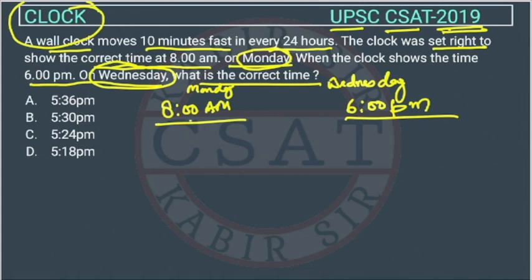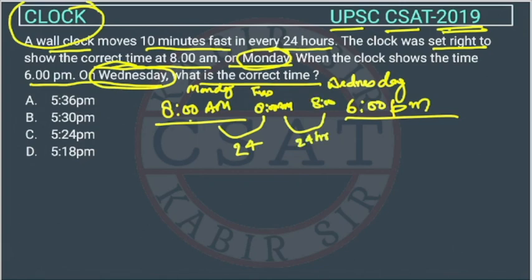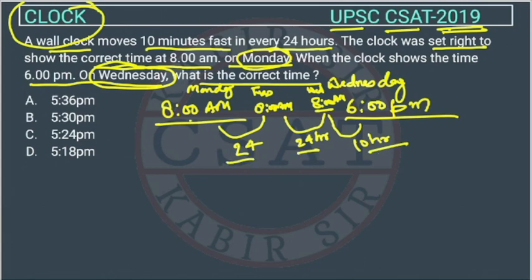If we look carefully, we are setting it at Monday 8 am. Then Tuesday morning 8 am — this will be 24 hours. Then Wednesday morning 8 am — this will be another 24 hours. Now on Wednesday morning we are at 8 am, and the examiner is asking about evening 6 pm, so the difference is 8 to 6 pm which is 10 hours.